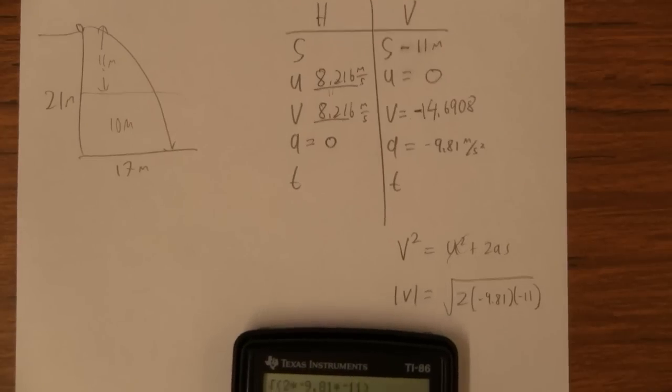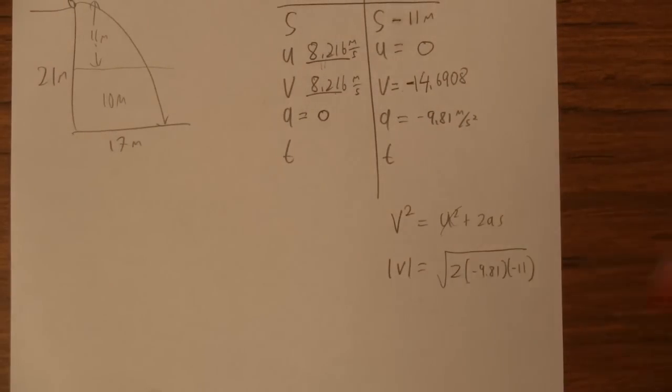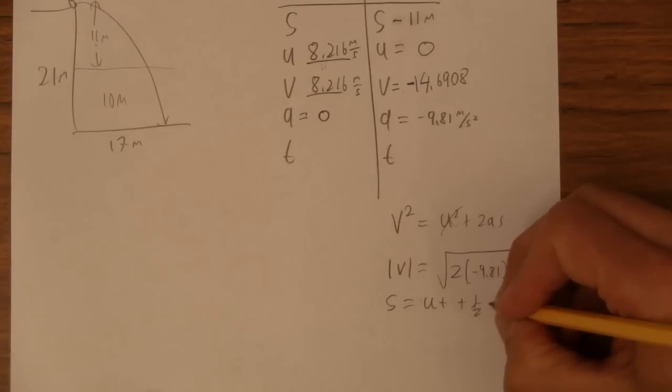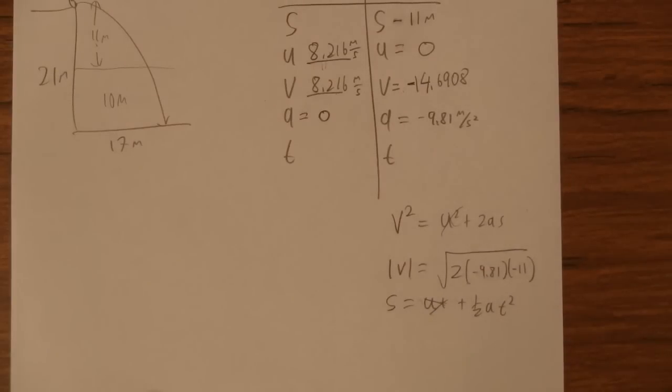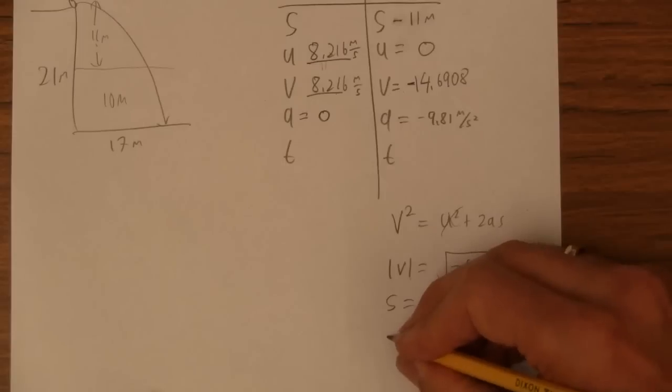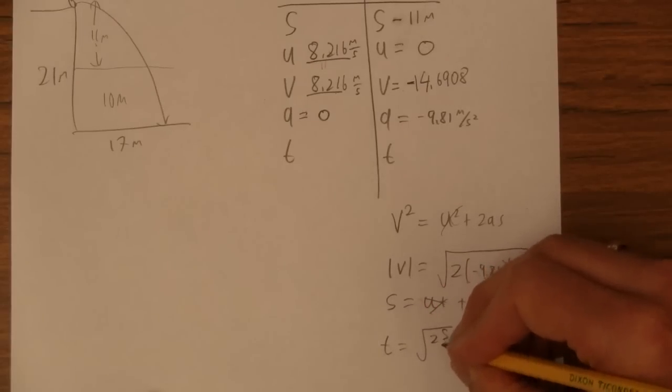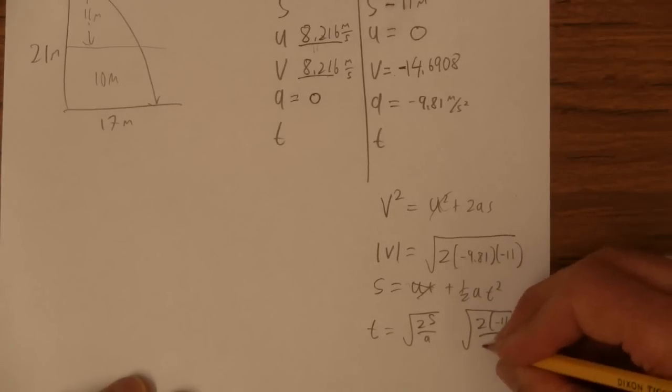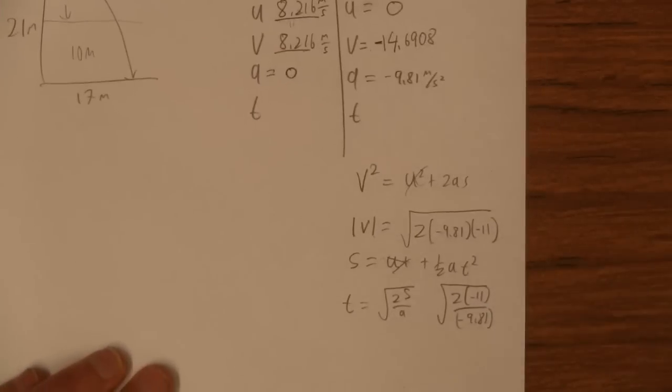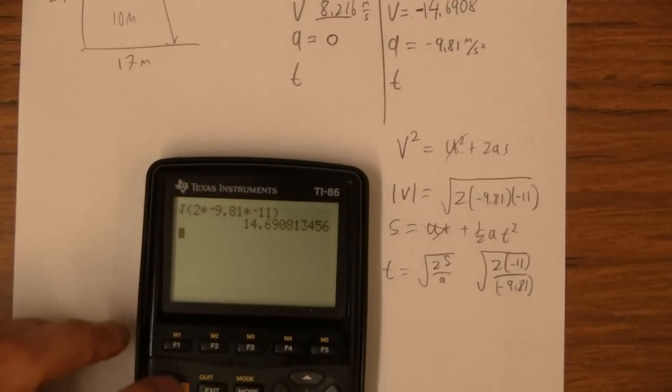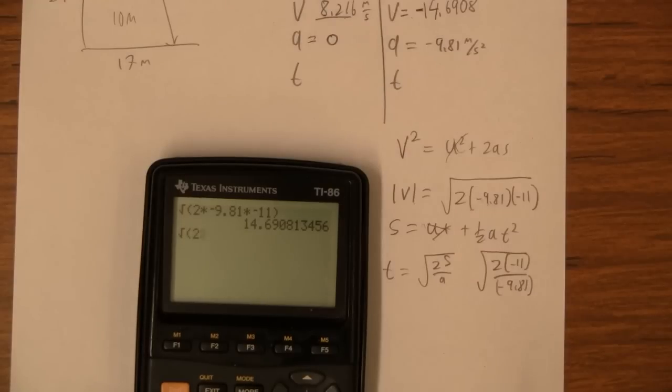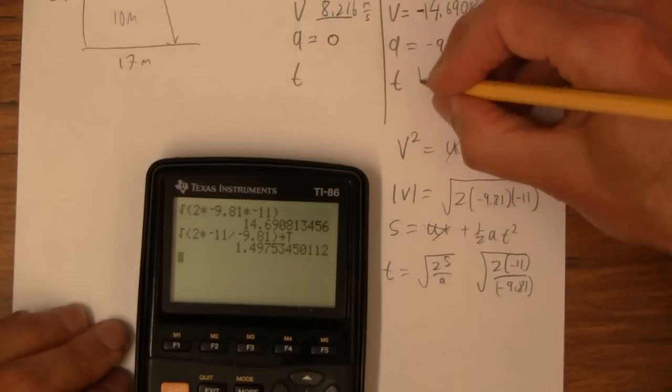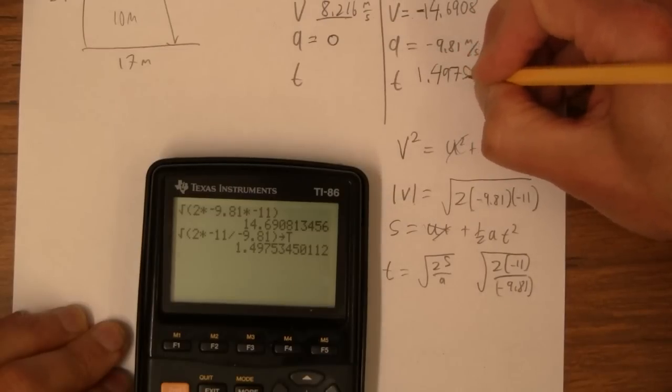And then the time I can find by using s is ut plus one half a t squared. And of course the initial velocity is 0. So I believe t is equal to the square root of twice s over a. Just solving that. And then that's the square root of 2 times negative 11 divided by negative 9.81. Let's type that in. Square root of 2 times divided by negative. I'm going to store that in t just for fun. 1.4975.